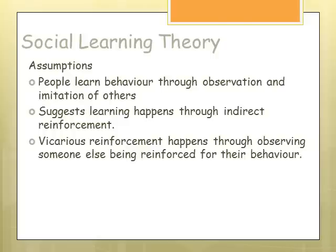Social learning theory is still based on the idea of reinforcement, but we learn our behaviour through observation of others and imitate that behaviour. It happens through indirect reinforcement — something called vicarious reinforcement — where we see someone else being rewarded for their behaviour and it motivates us to imitate that behaviour.